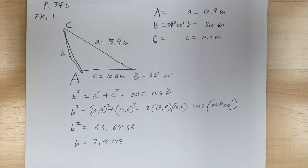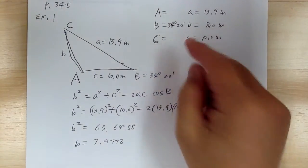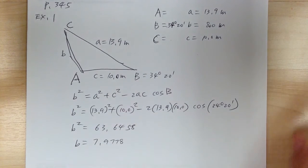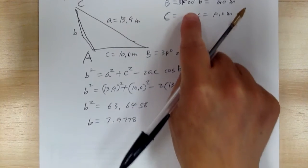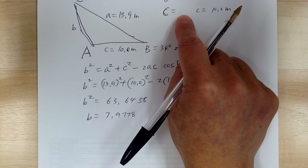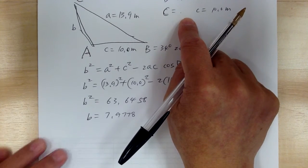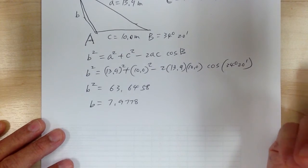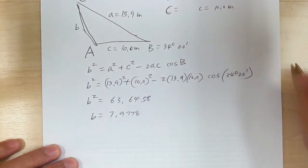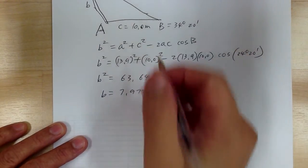Think of it like playing cards — three different kinds is like a straight: A, B, C, so you use law of cosine. Two of the same letter is like one pair, so you use law of sine. That's a way to remember. So now let's get angle C using the law of sine. You can use law of cosine with A, B, and C, but it's too much trouble, so we'll use law of sine to find angle C.